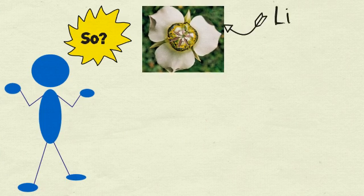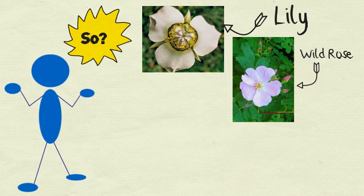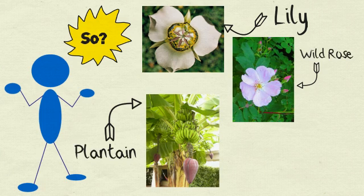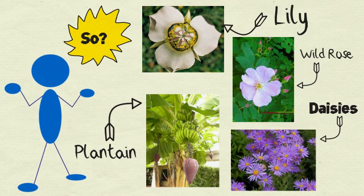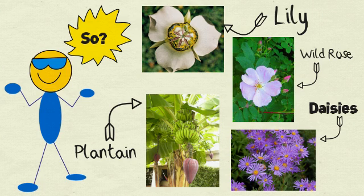Fibonacci numbers appear in nature quite often. For example, a lily has three petals, a wild rose has five, a plantain has 34, and certain daisies have 55. And yes, these are all Fibonacci numbers.